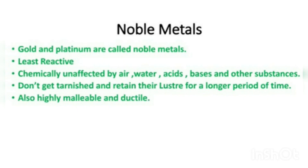Hello students. In this video from the chapter 'Metals and Non-metals,' we will study about noble metals and uses of metals, non-metals, and alloys. First, we have to study noble metals. As we have seen in the reactivity series, the last two elements are gold and platinum. Since they lie at the bottom of the reactivity series, they are very least reactive, and that is why they are called noble metals.